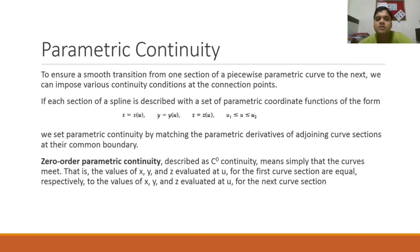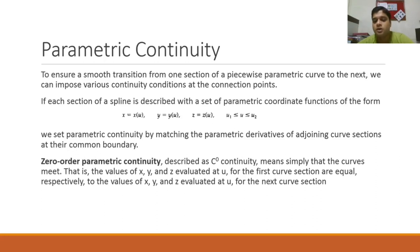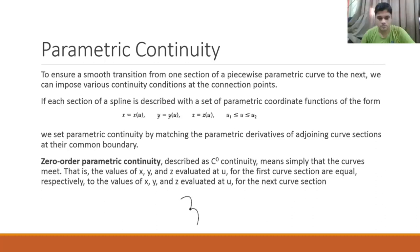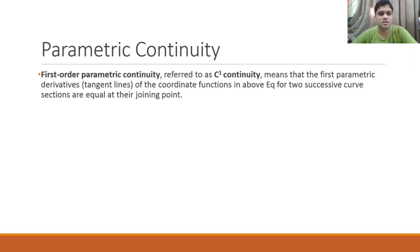There are three levels of continuity when dealing with cubic curves. Zero-order parametric continuity, described as C0 continuity, simply means that the curves meet — the values of x, y, and z evaluated at u for the first curve section are equal to the values for the next curve section at their common endpoint. That is what we mean by zero-order parametric continuity.